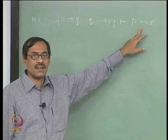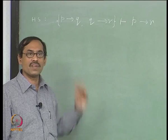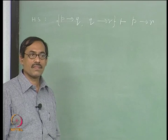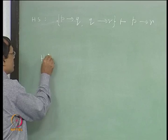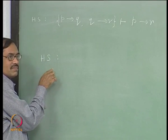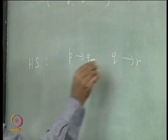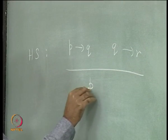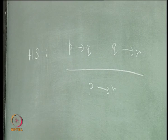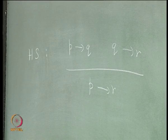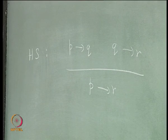You can derive p implies r. You can write it as an inference rule — hypothetical syllogism — which says: from p implies q and q implies r, you derive p implies r. So each consequence gives rise to such an inference rule, which we call derived inference rules. Just like theorems are termed derived axioms, the same way consequences can be called derived inference rules.